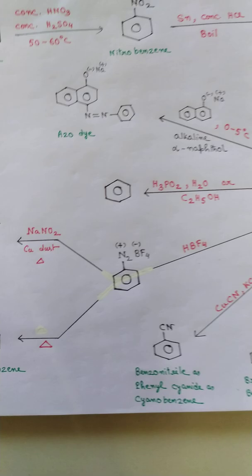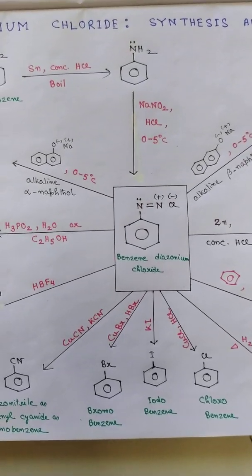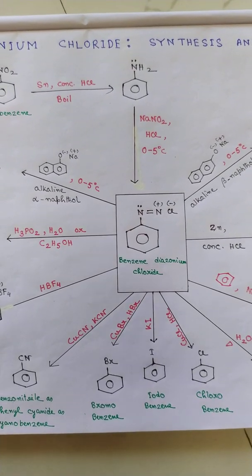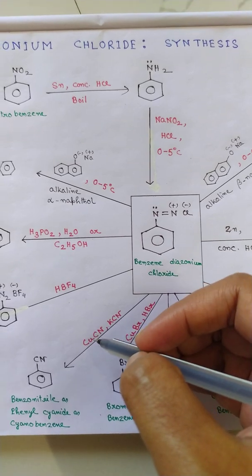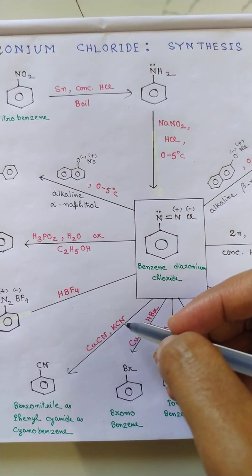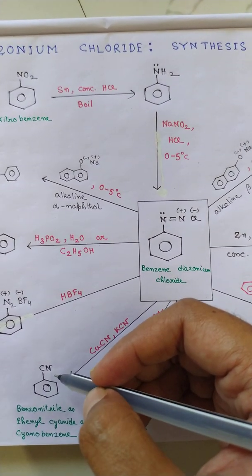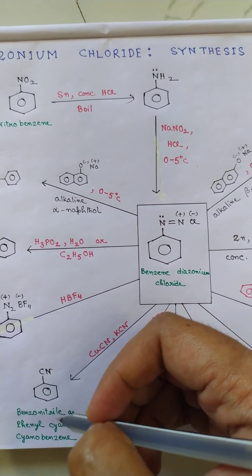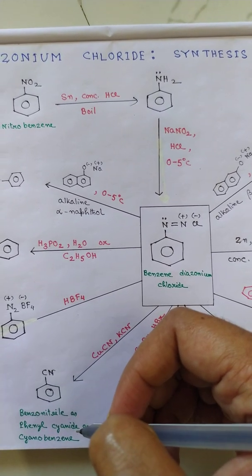So all the four haloarenes can be obtained from this single compound. Now another reaction: if we apply CuCN and KCN, then we have cyanobenzene. There are other names for this compound: benzene nitrile, phenyl cyanide.